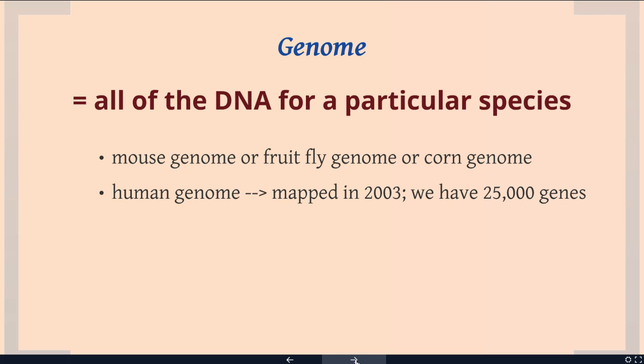It took many researchers and different universities all working together to create the human genome — it took them 13 years. The technology that was developed, however, has made it much faster, and now you can get the genome for a species in about three weeks. It's still very expensive, but we have the computers and hardware to make that happen quickly.